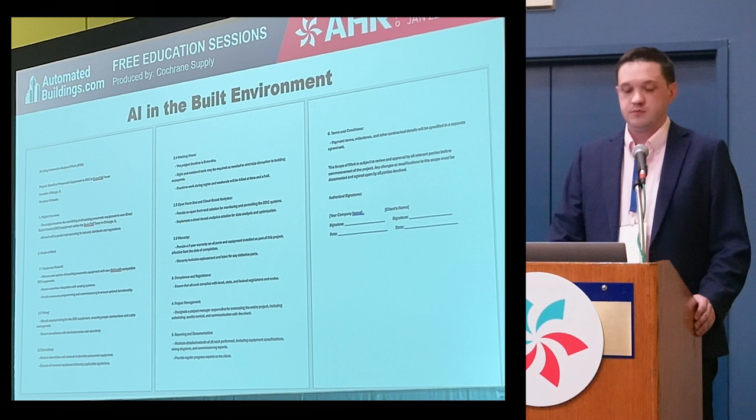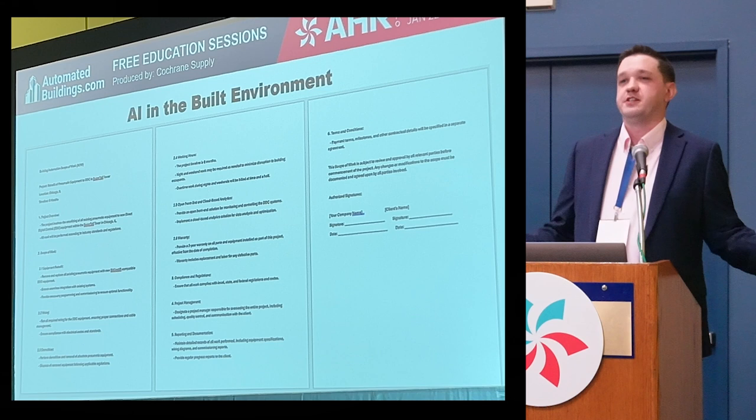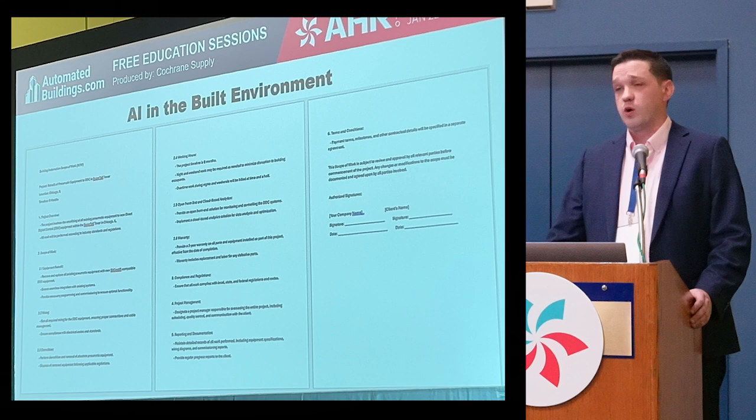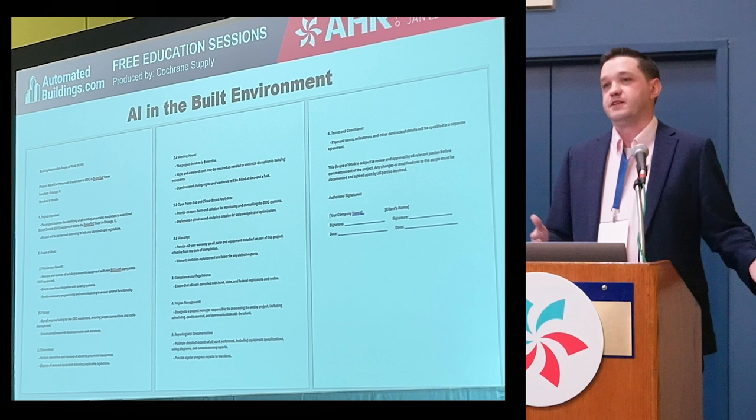For the built environment, one way we've seen AI being used more often is for construction documents. There's a vast array of construction documents available online because of public inspect and similar resources. Tons of construction documents are available for these models that are already trained on them. So if you tell it you need a scope of work, if you ask it to help write an added work order, a change order, or look through a set of specifications, it's pretty good at it.